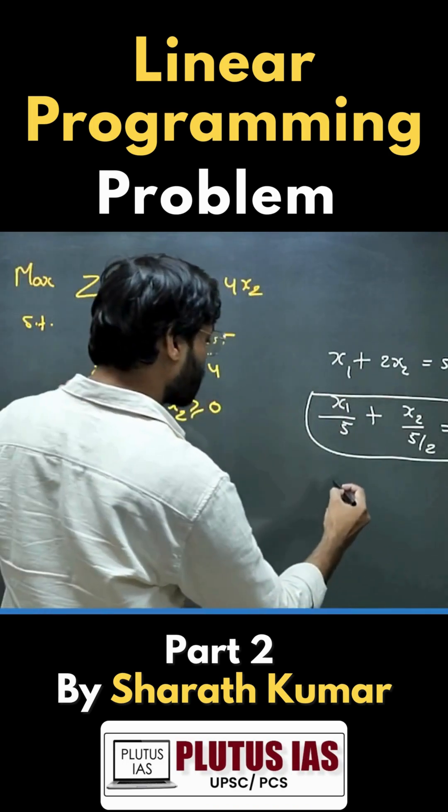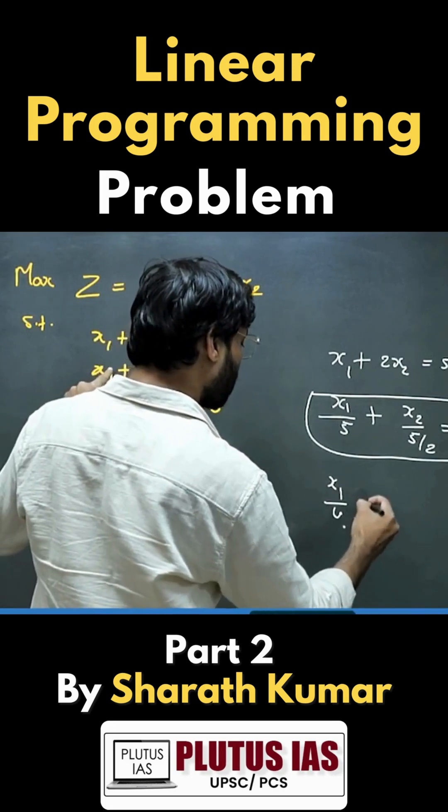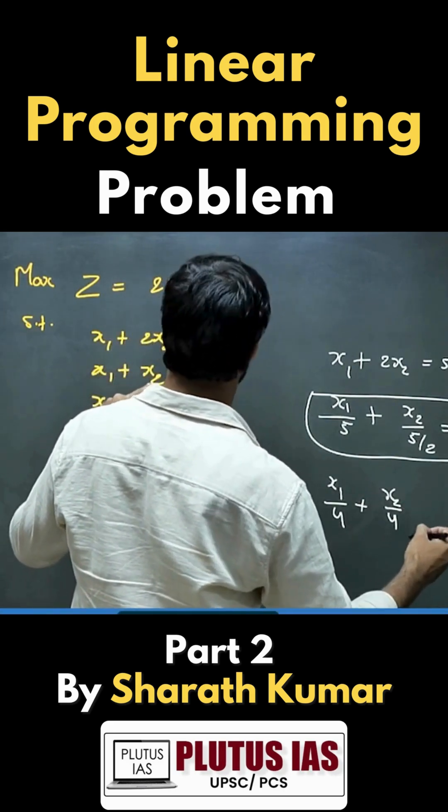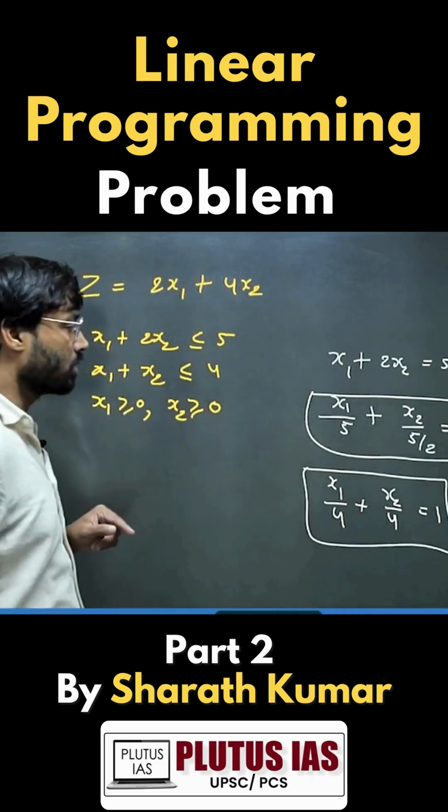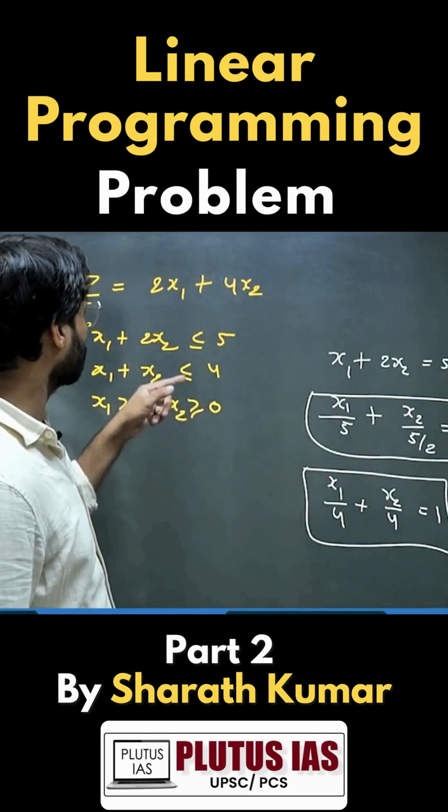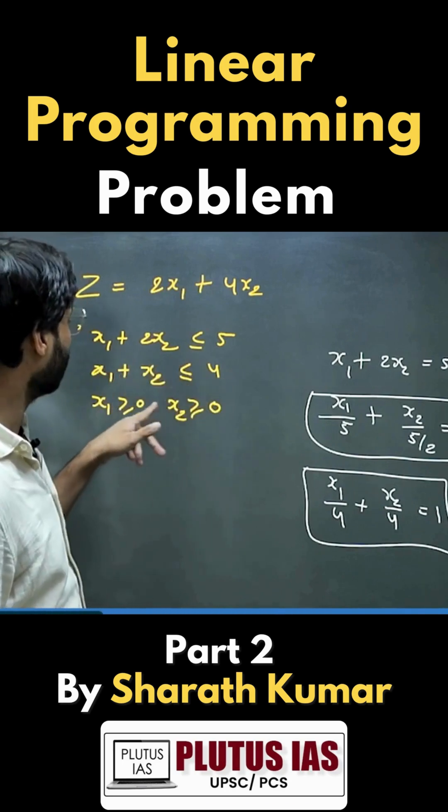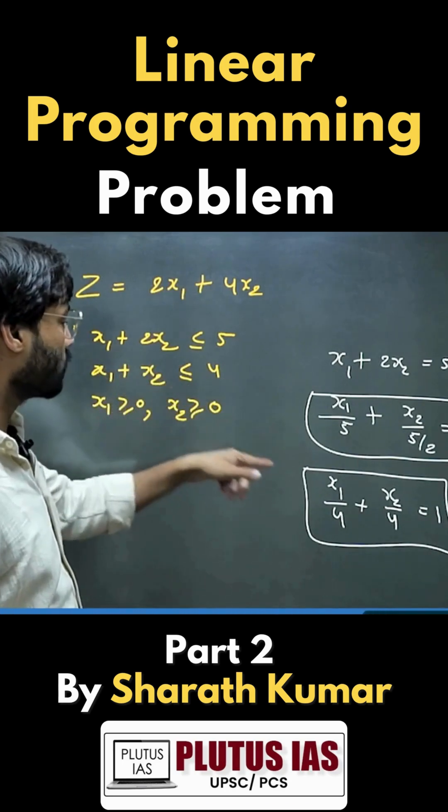The second equation we have to test is x1/4 + x2/4 = 1. So we have to test these two lines in intercept form.